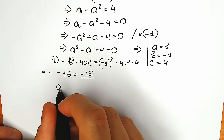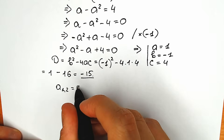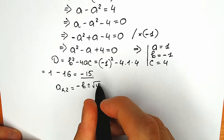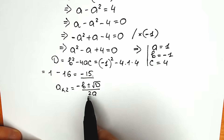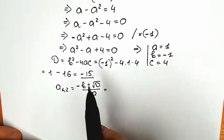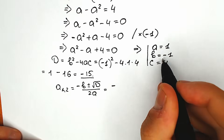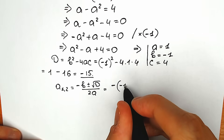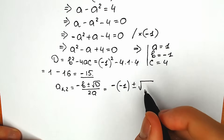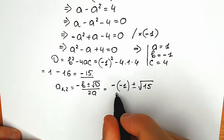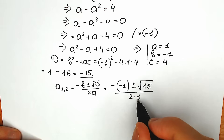Here are a₁ and a₂ — we plug everything into the quadratic formula. So we have: minus b plus or minus the square root of the discriminant, all over 2a. We know b, we know d, we know a. So plugging in: minus b is minus(minus 1), so plus 1, plus or minus the square root of 15, all divided by 2 times 1, which is 2.